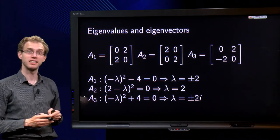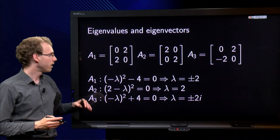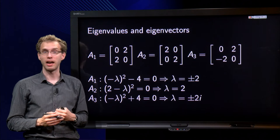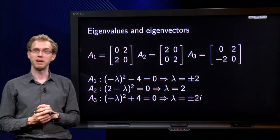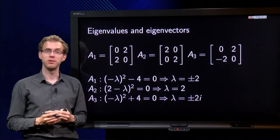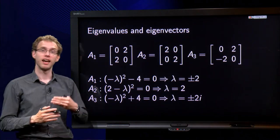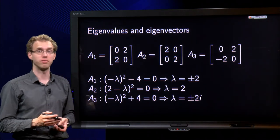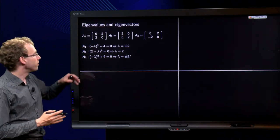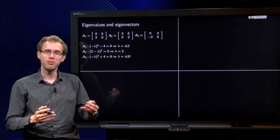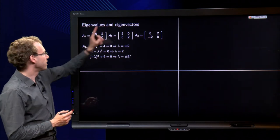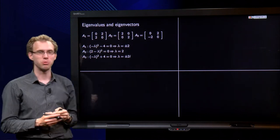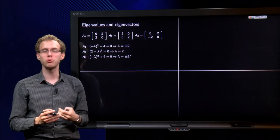So here we have complex eigenvalues. The first matrix has two real eigenvalues, the second matrix has one real eigenvalue, and the third matrix has only two complex eigenvalues and no real eigenvalues. But if you include complex eigenvalues, then this matrix has two eigenvalues, this matrix has two eigenvalues, and this matrix has sort of two eigenvalues.